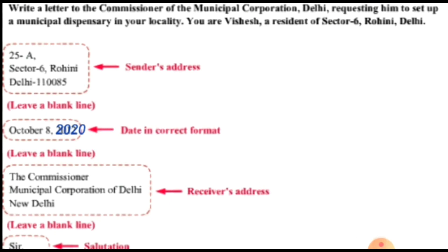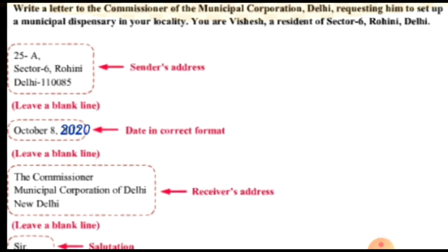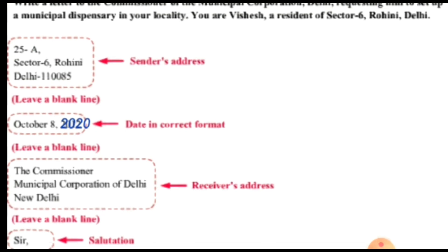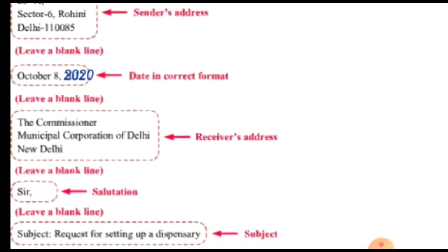The sender address — your address — is: 25A, Sector 6, Rohini, Delhi 110085. Leave a blank line, then write the date in the correct format: month, date, then year — 2020. Leave a blank line again and write the receiver address: The Commissioner, Municipal Corporation of Delhi, New Delhi. Leave a blank line, then write the salutation: 'Sir' or 'Madam.'